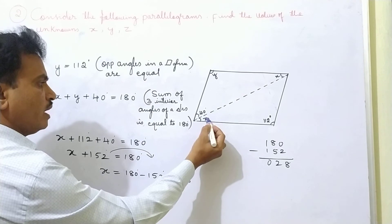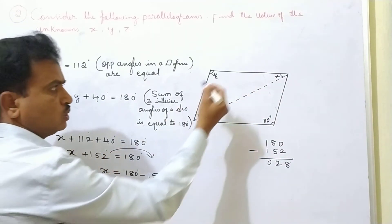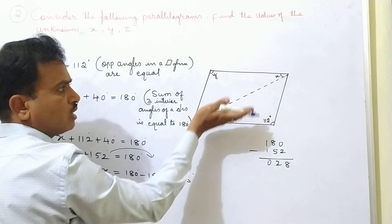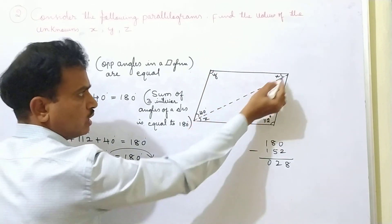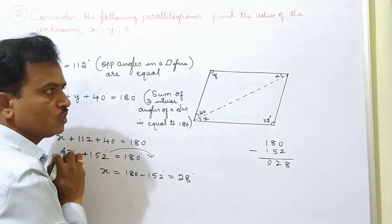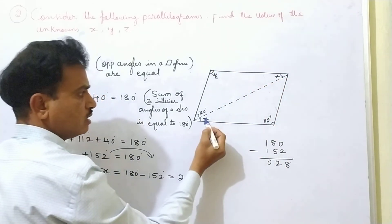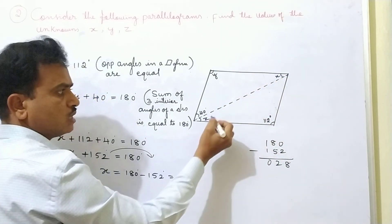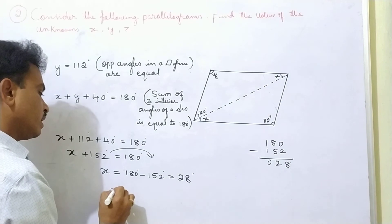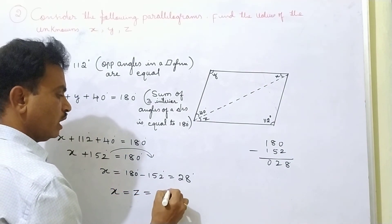Then we can find Z by using alternate angles are equal. In a parallelogram, opposite sides are parallel, so these two lines are parallel to each other. The diagonal acts like a transversal line. So X and Z — these two angles are alternate angles, and alternate angles are equal. Therefore Z is equal to 28 degrees.